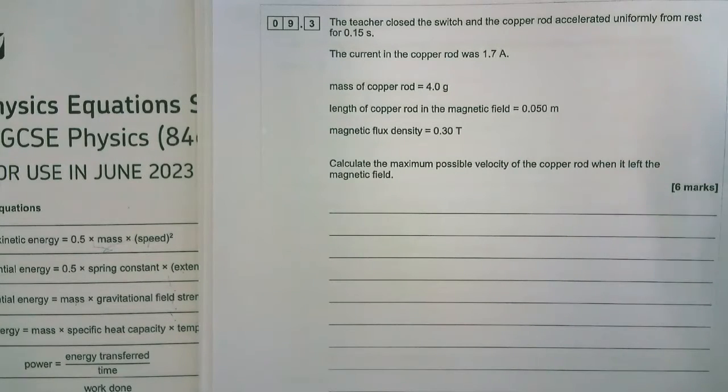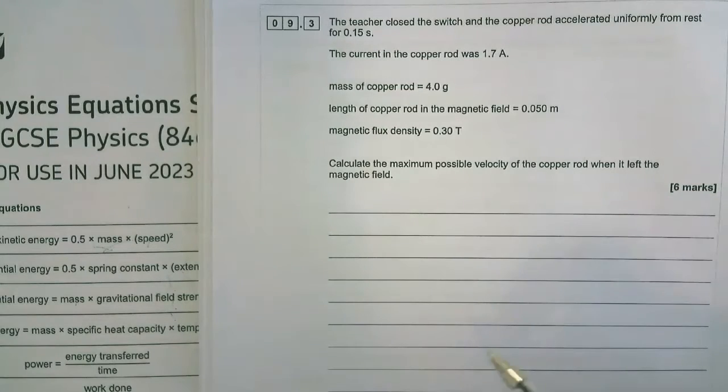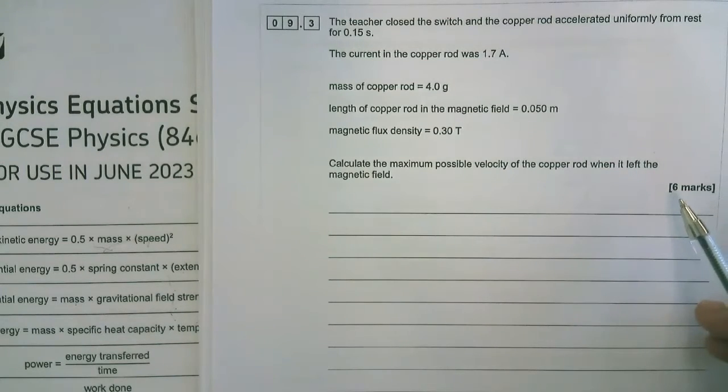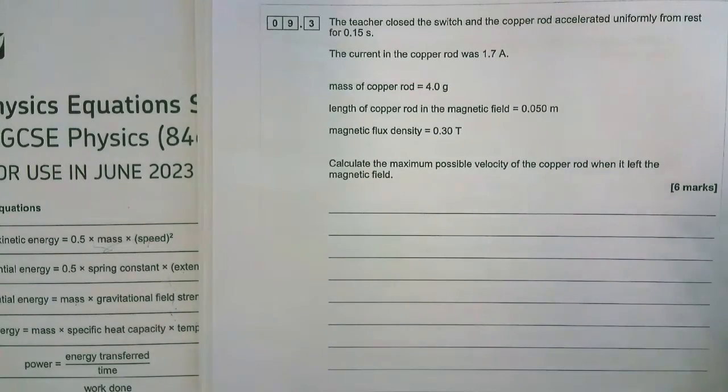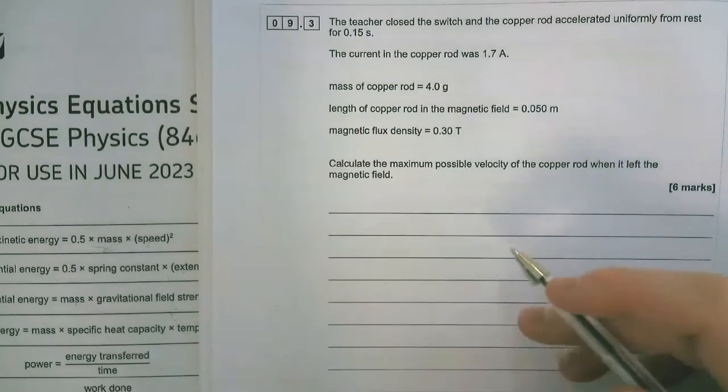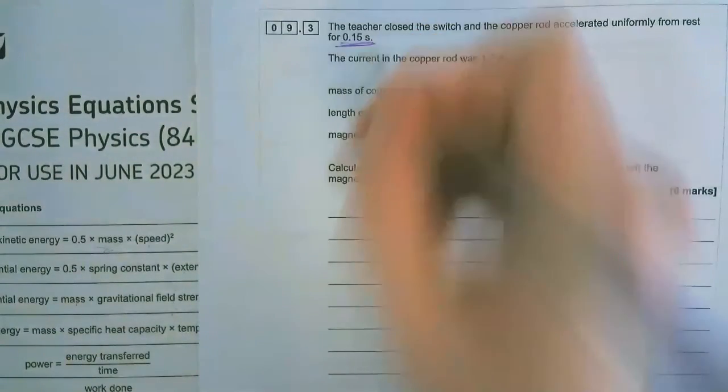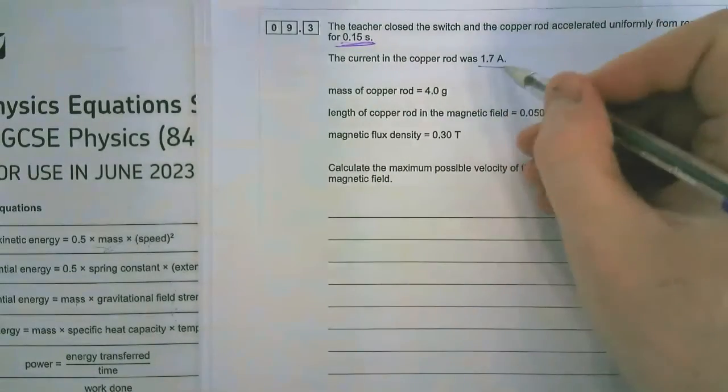Multi-step equation questions have come up every single year on a higher tier paper, separate or combined science. How do you know a question contains more than one step, more than one equation? First of all, there'll be five or six marks, and there'll be a lot of information in the question rather than just when you've got to find a third thing and you're given two other things.